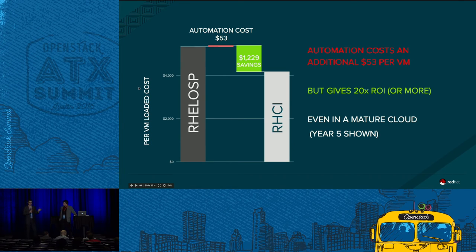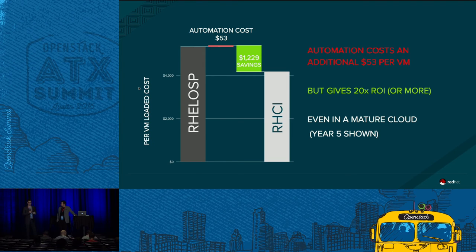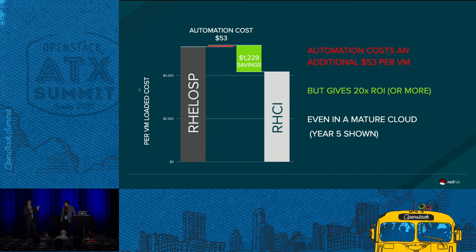Looking at the financial comparison between a commercial distribution of OpenStack and a commercial distribution with CloudForms and automation: yes, it's extra software and software costs more — it breaks out to about $53 per VM. But the savings you gain as you grow, around $1,200 or more, means you are not having to double your team every single year just to keep up with the growth. Tremendous savings there.